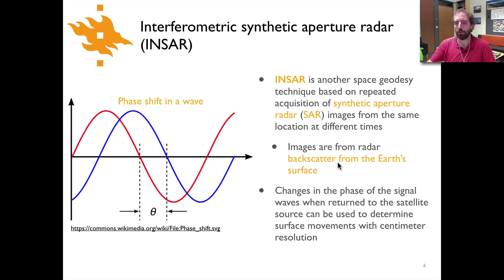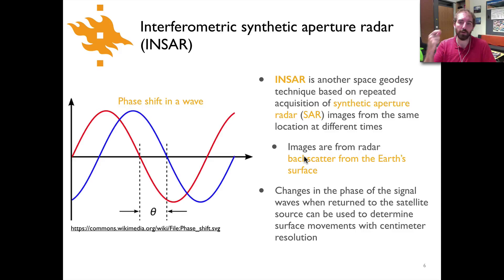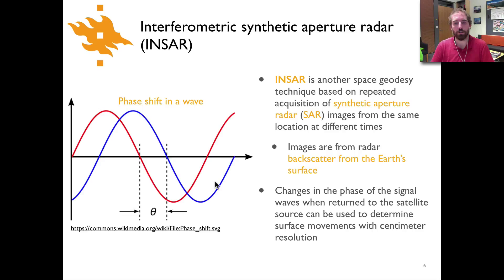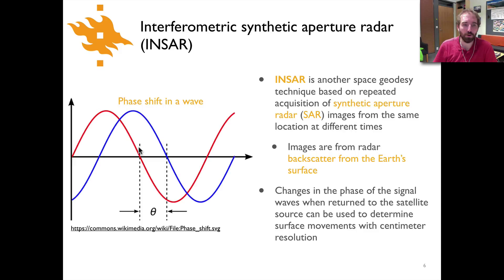These signals are typically microwave radiation, so they have a wavelength. They propagate down to the surface, bounce off, and the total travel time and the position within the wave itself can be used to determine how much difference there is between the last time an image was taken and the next time. Essentially what you have is a phase shift in the wave — shown here with a sine wave in red and another sine wave in blue where there's an offset in the position where you're crossing the axis, indicated as theta.